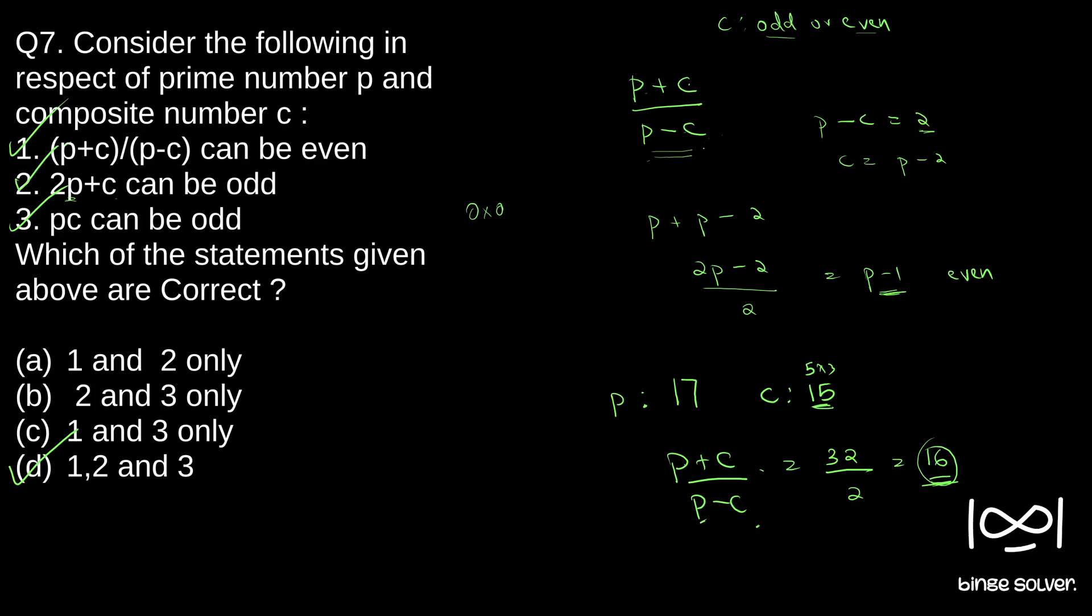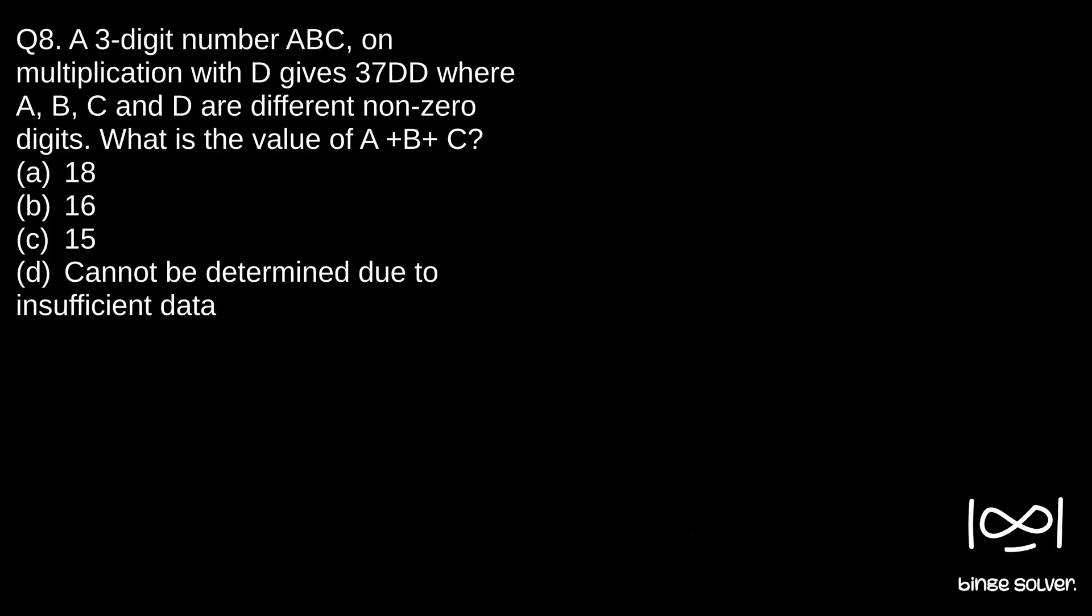Next question. Question 8. A three-digit number ABC on multiplication with D gives 37DD where ABC and D are different non-zero digits. What is the value of A plus B plus C? The options are 18, 16, 15, and cannot be determined due to insufficient data.